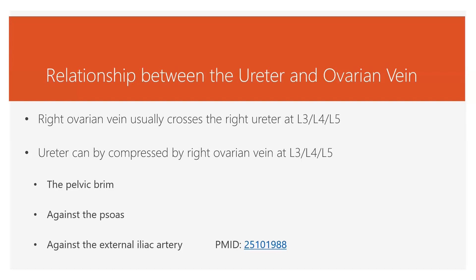The vein can also cross lower at the pelvic brim. It can squeeze off the ureter against the psoas or against the external iliac artery. If the ovarian vein is squeezing off the ureter against the external iliac artery, then you could be having lower extremity symptoms.